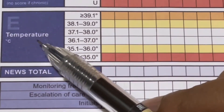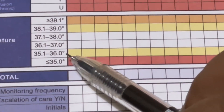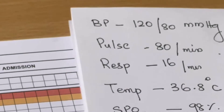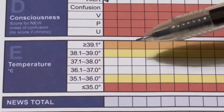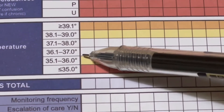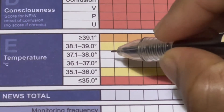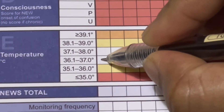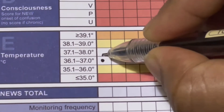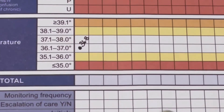Next is temperature in degrees Celsius. Our patient's temperature is 36.8 degrees Celsius, which falls under the 36.1 to 37 range, so we mark it at 36.8.